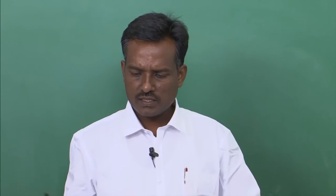Being a long duration crop, sugar cane can stand up to 12 months in the field. It requires optimum irrigation water throughout the growth period, which should be evenly distributed across all months. The optimum water requirement is 1500 to 2500 mm.